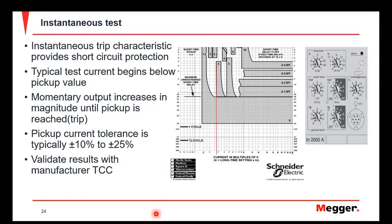The instantaneous test is a pickup test performed using a momentary current output. We start below the pickup point for the instantaneous setting, then pulse current in increasing magnitudes until the breaker trips — that's the pickup point. We record the current value at which the breaker tripped. For electronic trip unit breakers that value is typically plus or minus 10% of the pickup value; for older molded case breakers, the tolerance could be as much as plus or minus 25%.